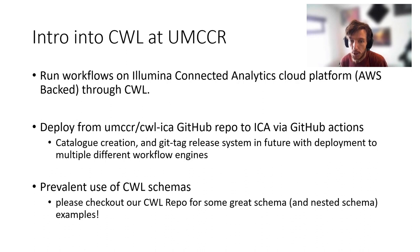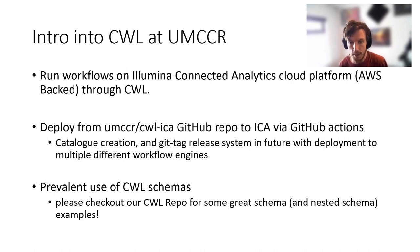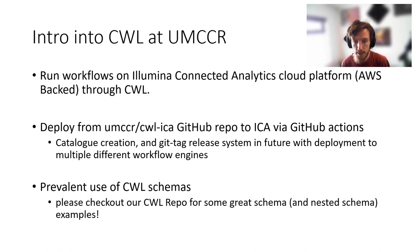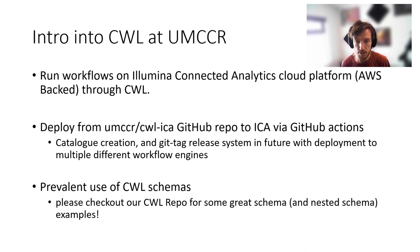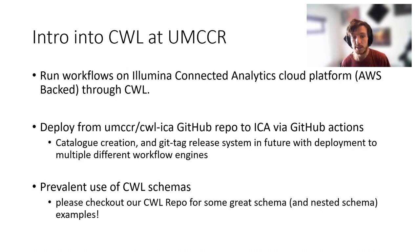I presented here a couple of years ago when we were on the cusp of making our CWL ICA repo public. We now have an automated pipeline via GitHub Actions that pushes information back to GitHub after interacting with the ICA API, auto-builds documentation based on CWL labels and doc attributes, and allows us to update workflows in our ICA development environment while keeping production workflows immutable. We're also moving to a tag-based release system. Almost all of our production workflows use object orientation in their inputs via CWL schemas.